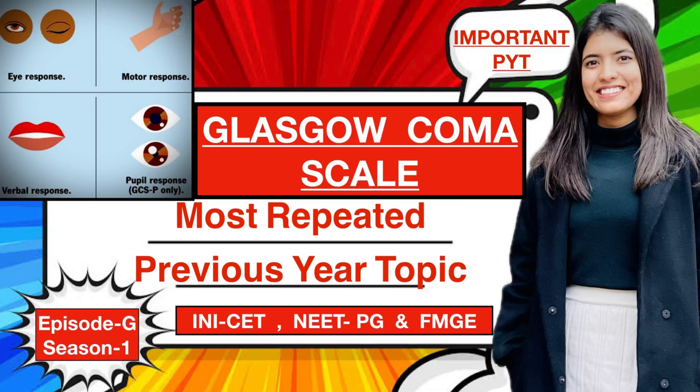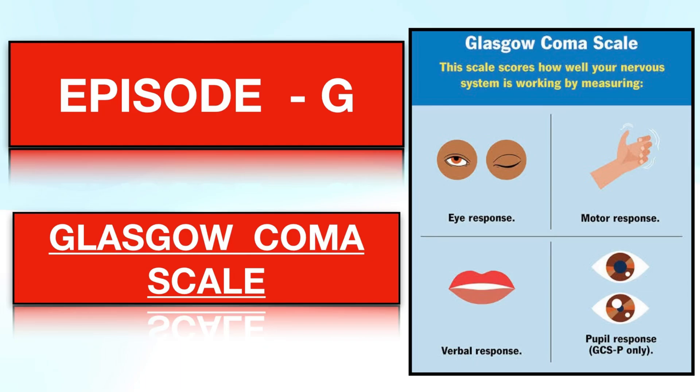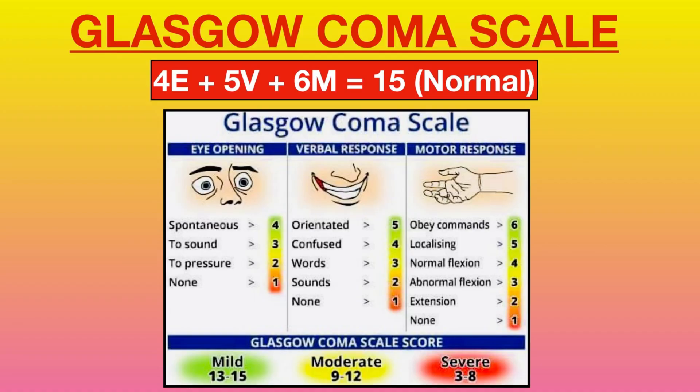Hi Doctors. Welcome to the new episode of our A to Z series where every day, alphabetically, we discuss one of the most repeated previous year topics of INICET, NEET PG, and FMGE. Today's episode is Episode G, where G stands for Glasgow Coma Scale, GCS. Before studying Glasgow Coma Scale in detail, we must keep this basic statement in mind: 4E + 5V + 6M = 15.